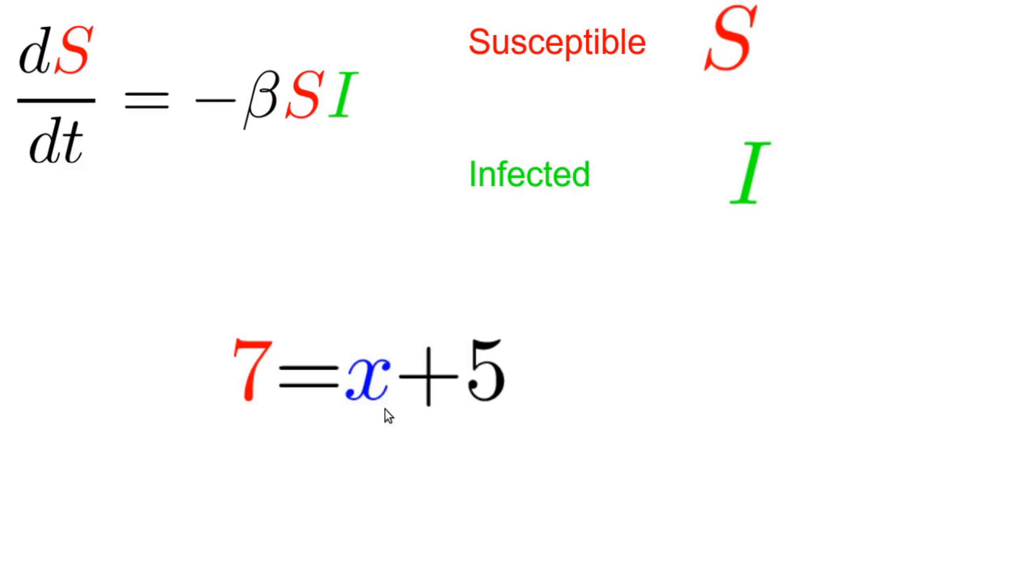These equations are not just describing a relationship between numbers, but this equation is describing a relationship between functions. S is a function of time and I is a function of time. This equation says that the rate of change of this function S is proportional to the product of the two functions S and I at every point in time.